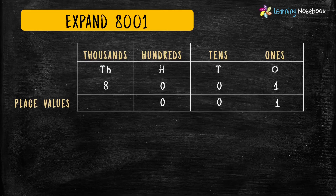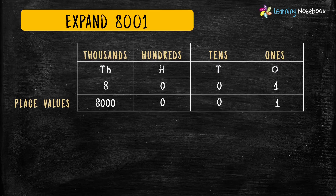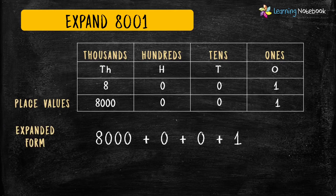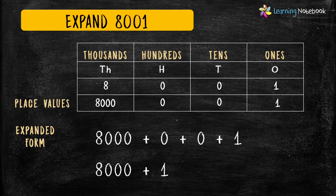The place value of 8 is 8000. Now, students, we know the place values, so we can write the expanded form of this 4-digit number, which is 8000 plus 0 plus 0 plus 1. Or, we can write the expanded form as 8000 plus 1. Both ways to write this expanded form are correct.